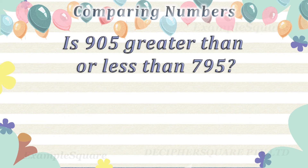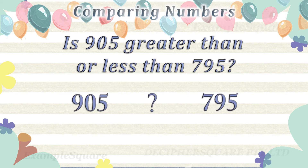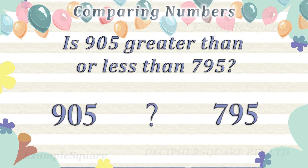Is 905 greater than or less than 795? 905 is greater than 795.